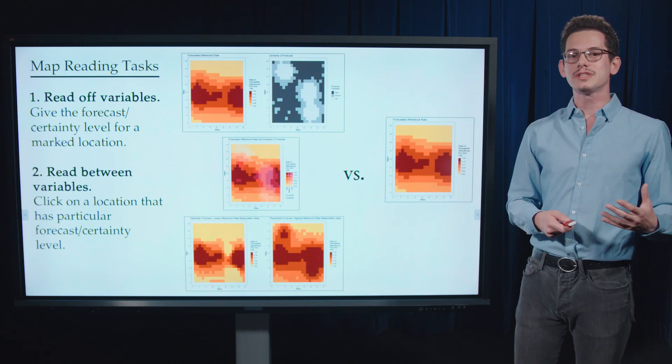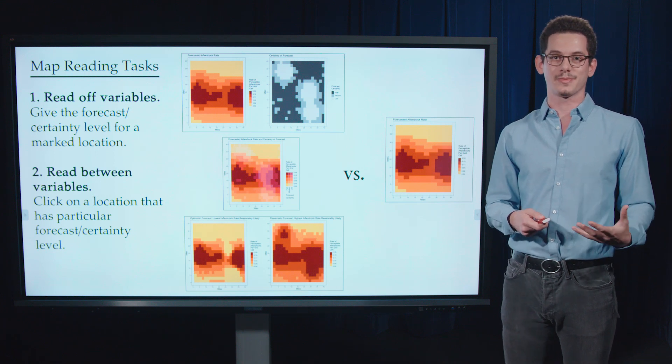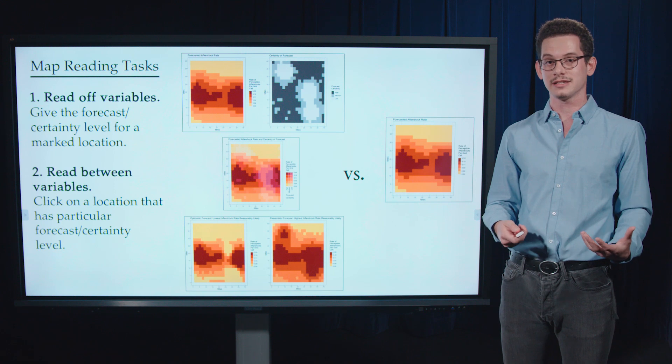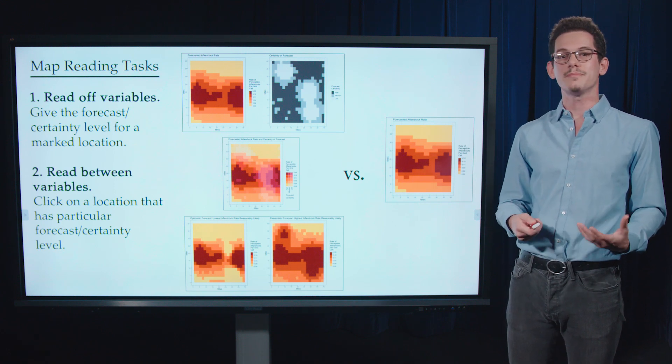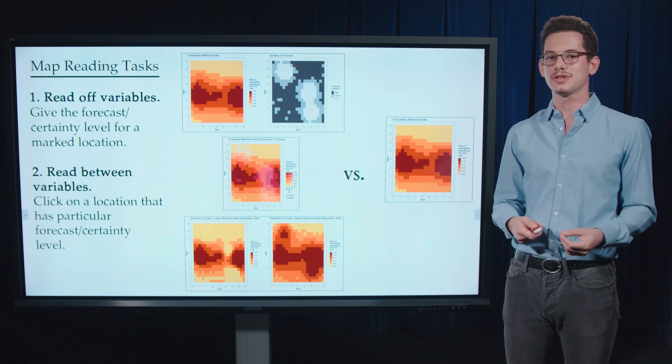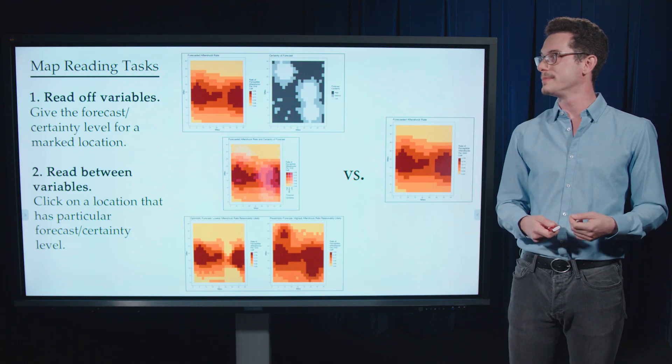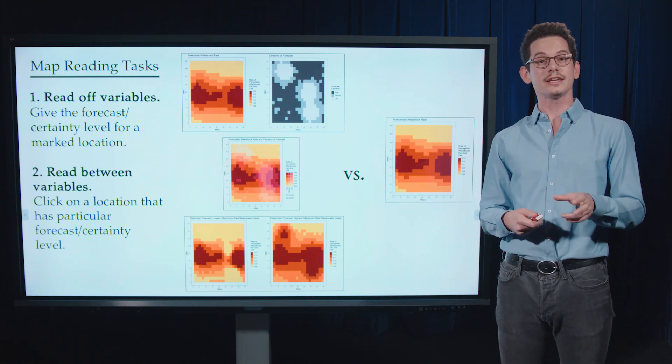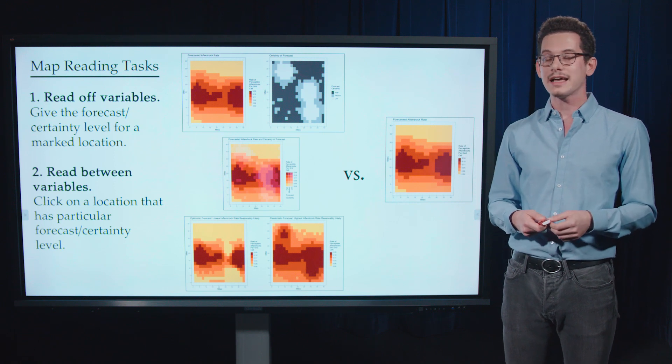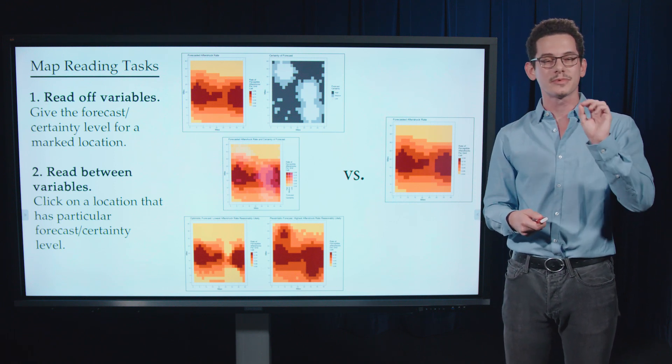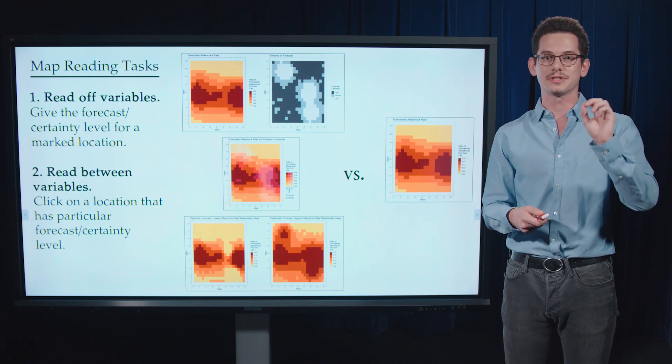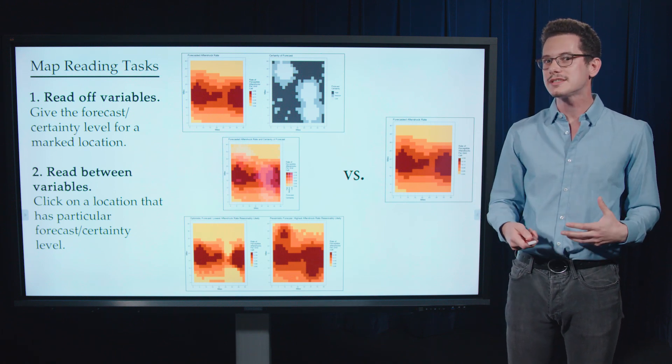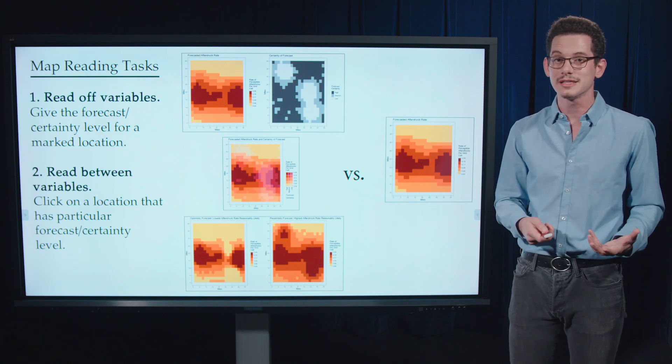And so we're using several tasks in our experiment to pick out these two measures of UV effectiveness. We have two map reading tasks where users are asked to give the forecasts and certainty levels for a particular marked location on the map. And another task where they have to click on a particular location that meets a particular certainty and forecast level. And this is just to see if they can read the map in the first place.